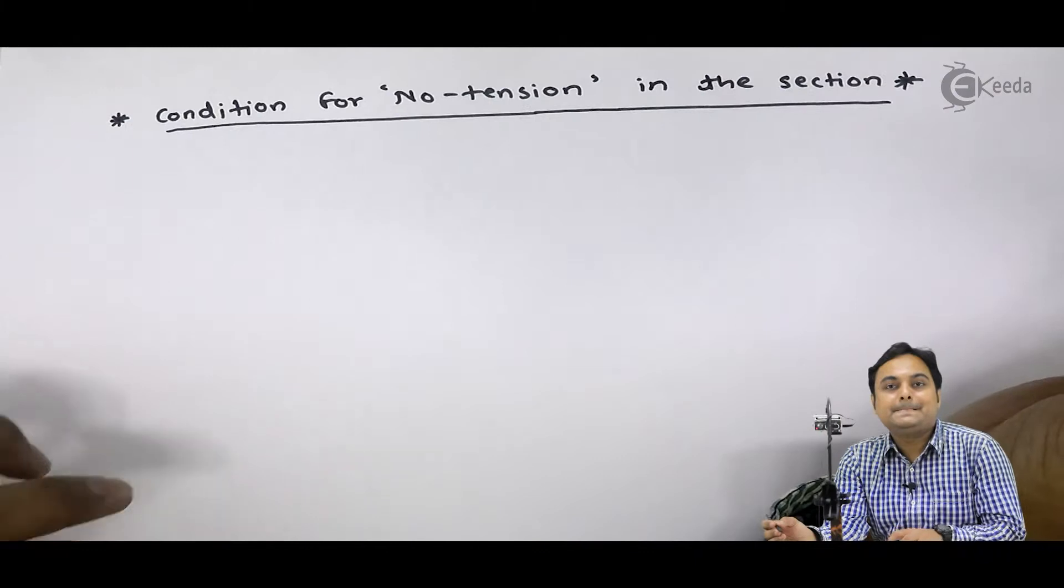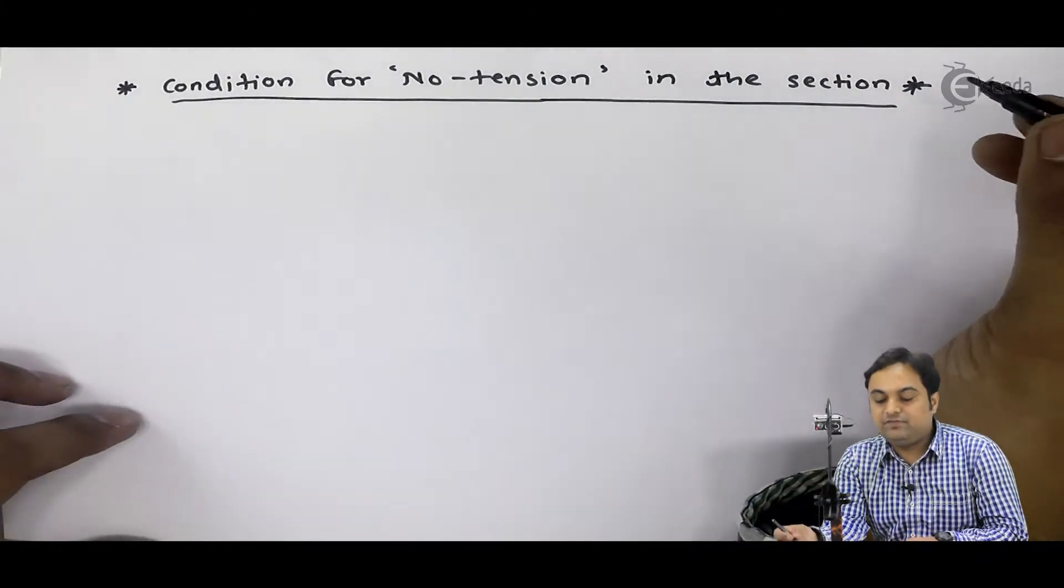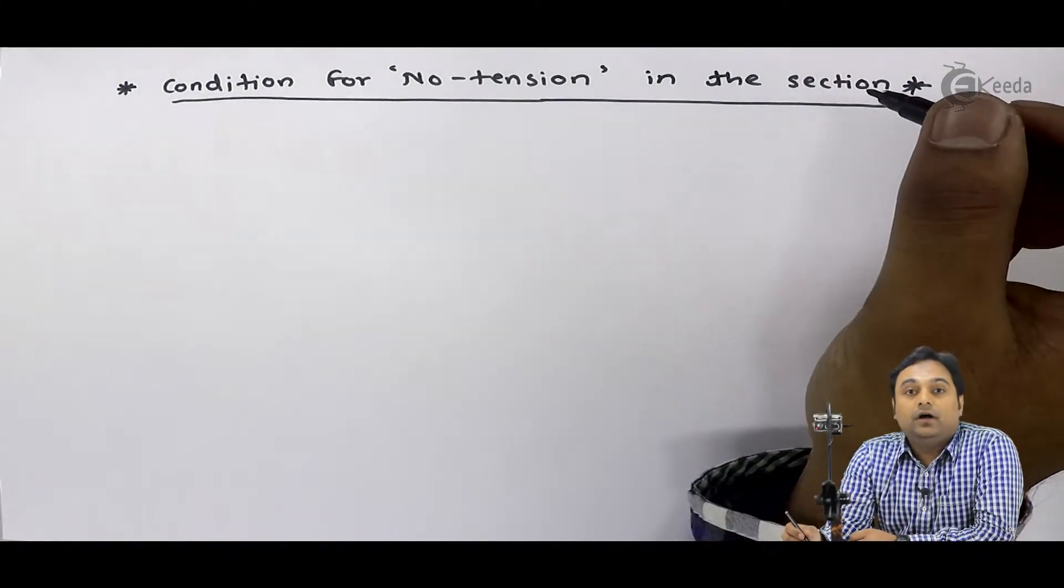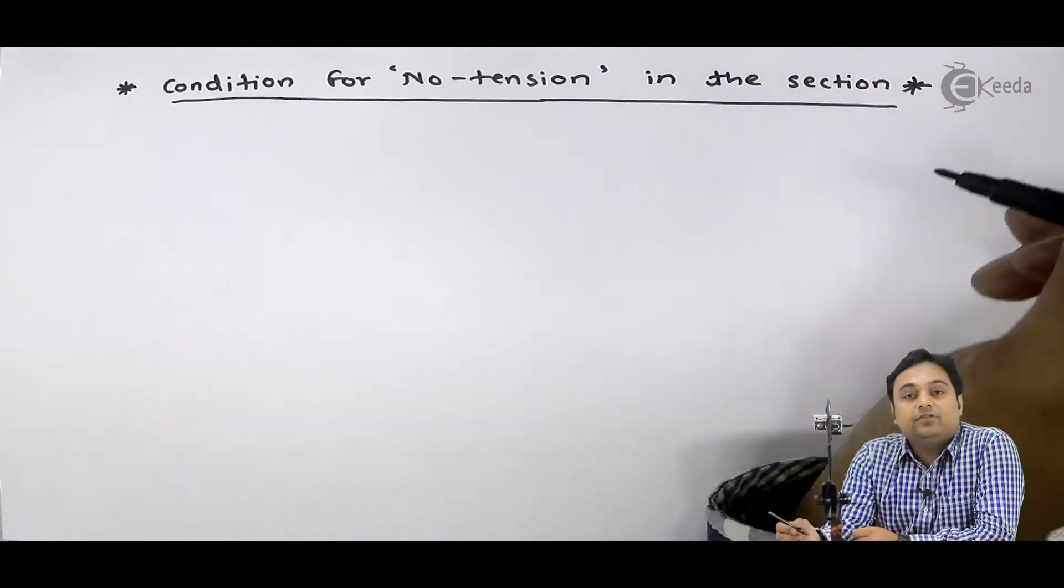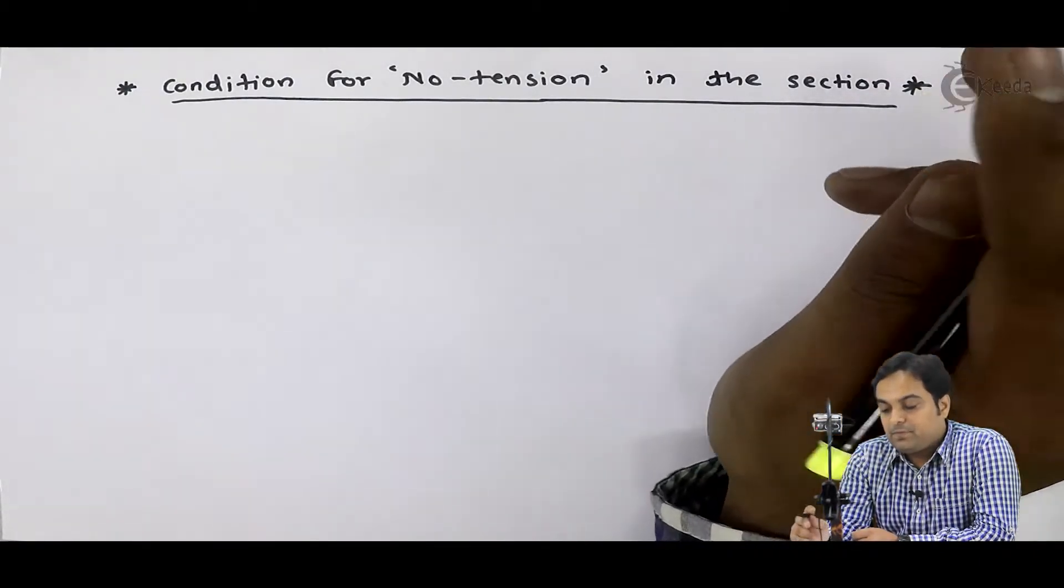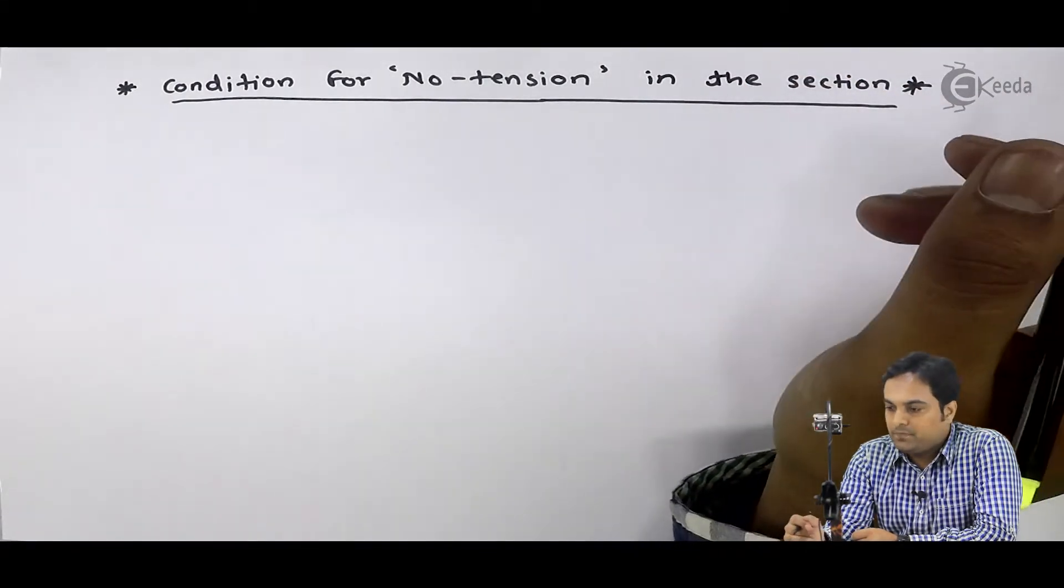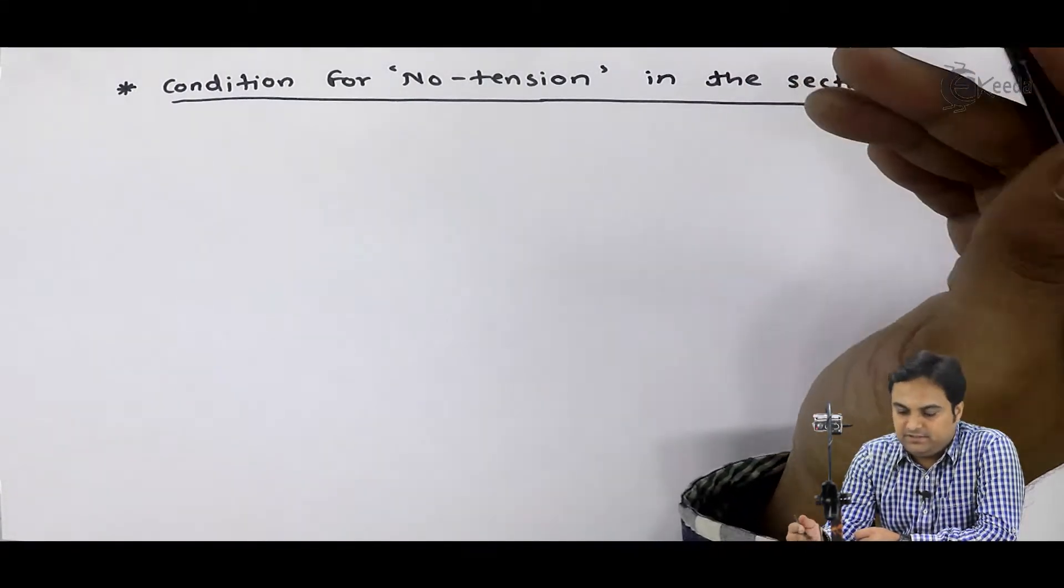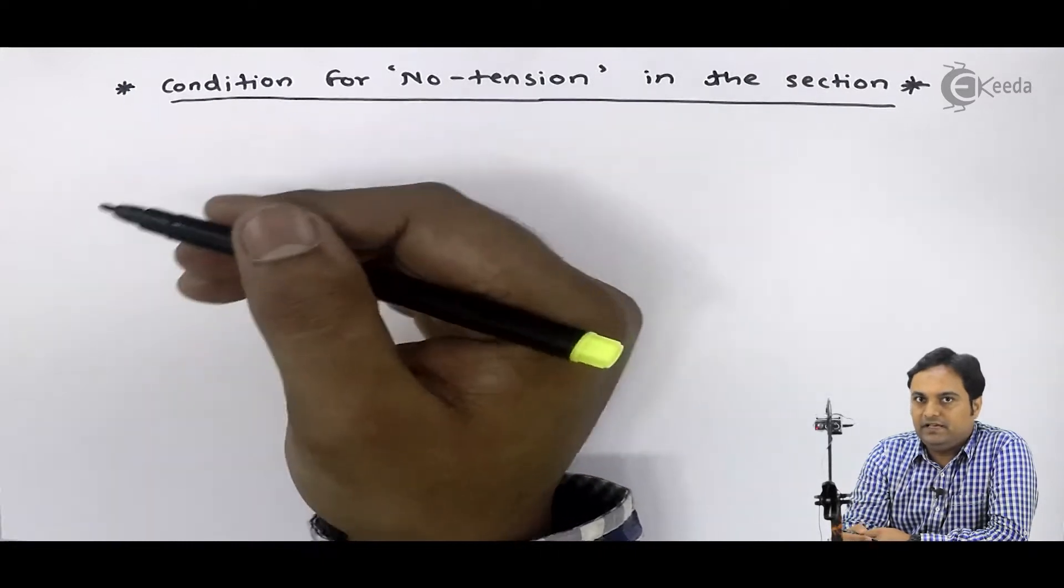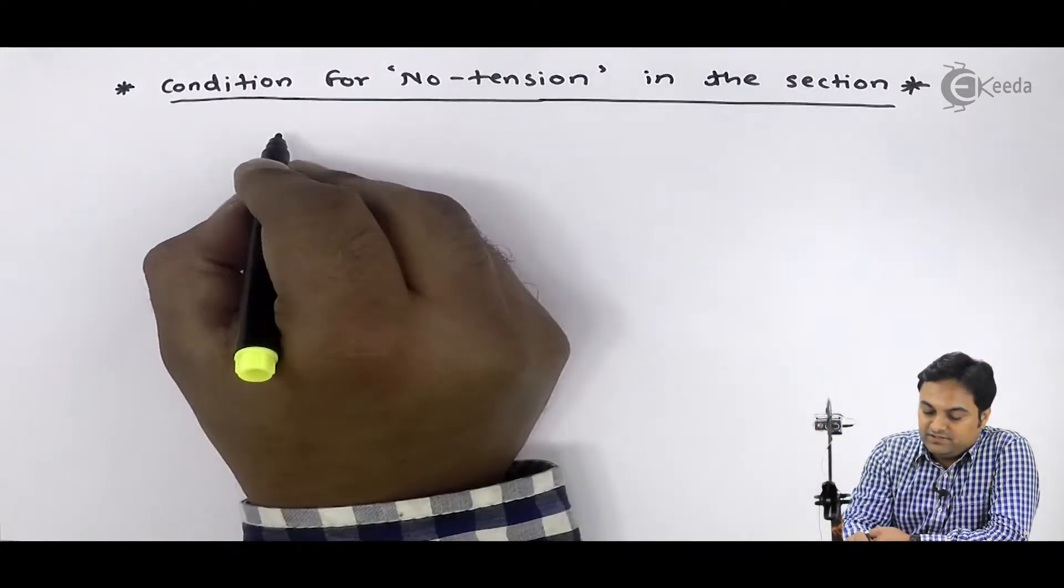Now, what is the meaning of condition for no tension in the section? In case of direct and bending stresses, if sigma max is positive, it means it is compressive stress. If sigma min is negative, it means it was tensile stress.